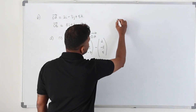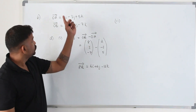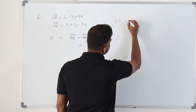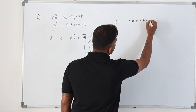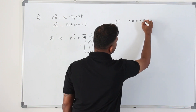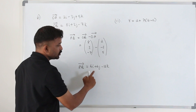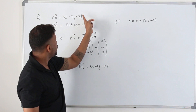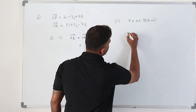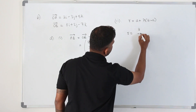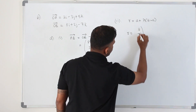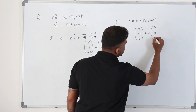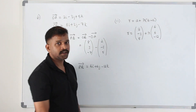Now for part A, we need to find the vector equation of the line passing through these two points. The vector equation of a line passing through two points is R = A plus lambda times (B minus A). B minus A is the AB vector we just found. You can use either A or B as the first vector. So the vector equation is: column vector (2, −3, 5) plus lambda times column vector (6, 6, −12). That's the vector equation.